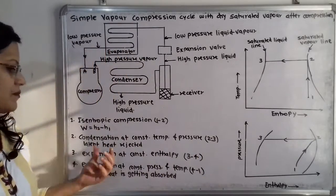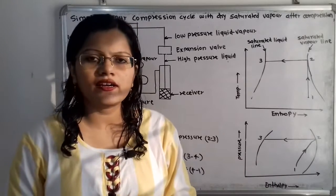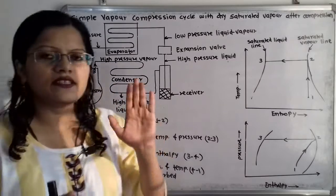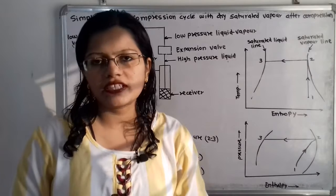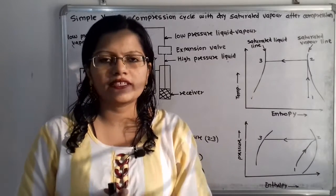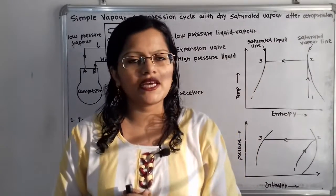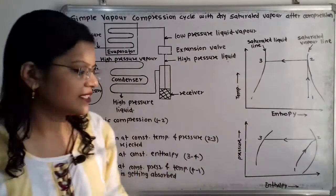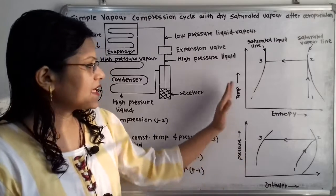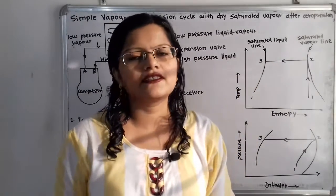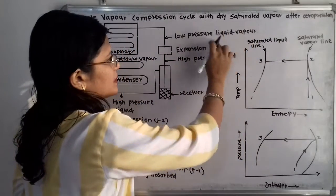The next process is expansion, which takes place at constant enthalpy. High pressure, high temperature liquid refrigerant from the condenser enters the expansion valve, where there is a partial reduction in pressure. As pressure decreases, temperature also decreases. Since enthalpy remains constant, we draw a straight vertical line on the P-H diagram. As pressure and temperature decrease, there is a slight increase in entropy, and a liquid-vapor mixture is formed.